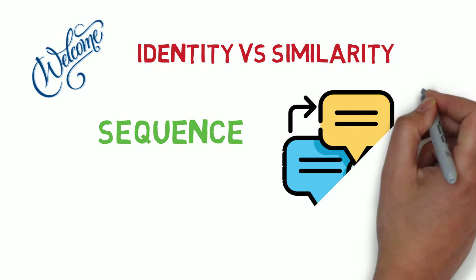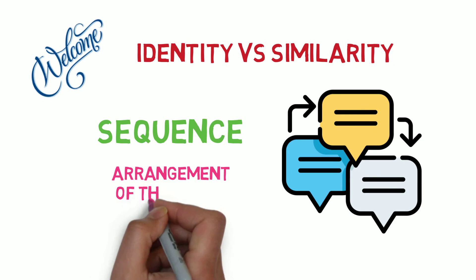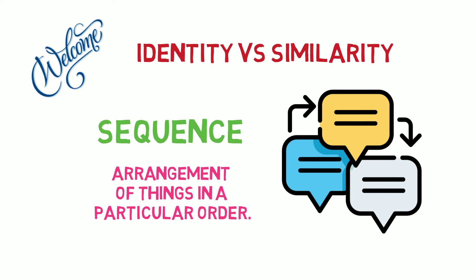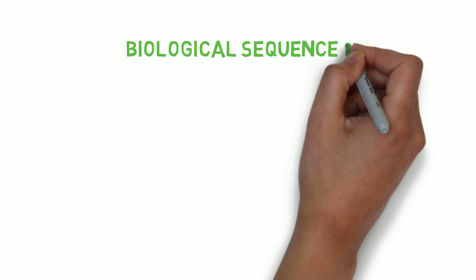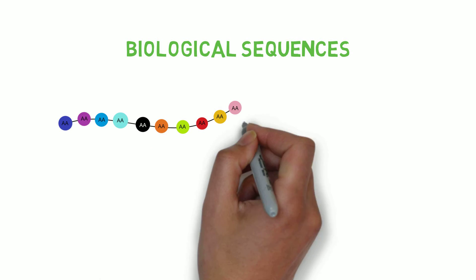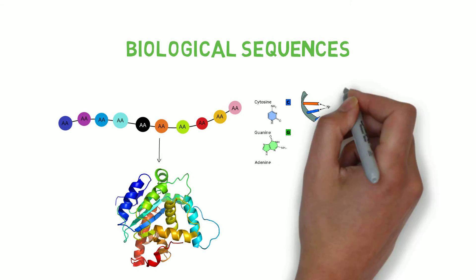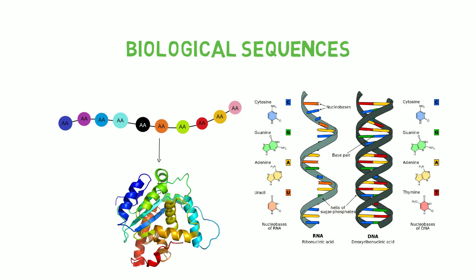The placement of two or more things in a particular sequence is referred to as a sequence. In biology, sequences are made up of amino acids for proteins and nucleotides for DNA and RNA.